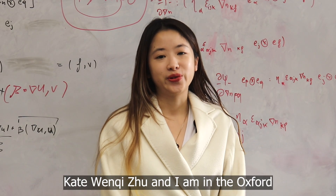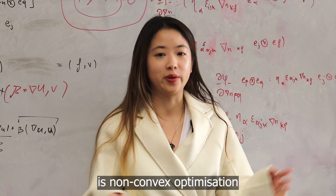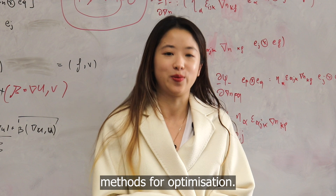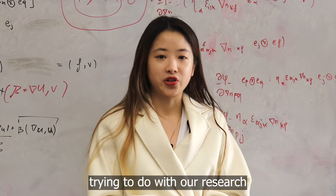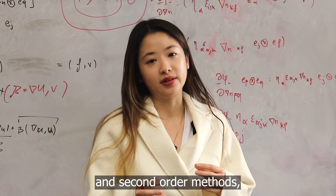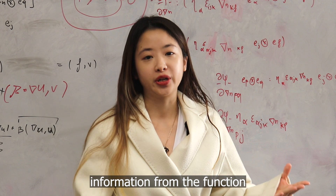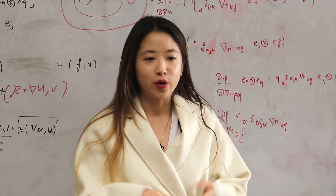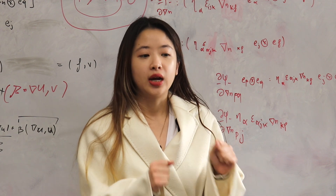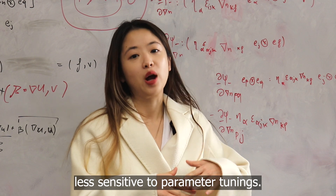My name is K2 and I am in the Oxford Numerical Analysis Group. I specialize in non-convex optimization — specifically tensor methods and higher-order methods for optimization. What we're trying to do is take gradient methods and Newton's method — first and second order methods — and go higher, getting higher-order information from the function and using tensor methods for approximation. This is beneficial because it has a better rate of convergence, can be used in machine learning, and is less sensitive to parameter tuning.